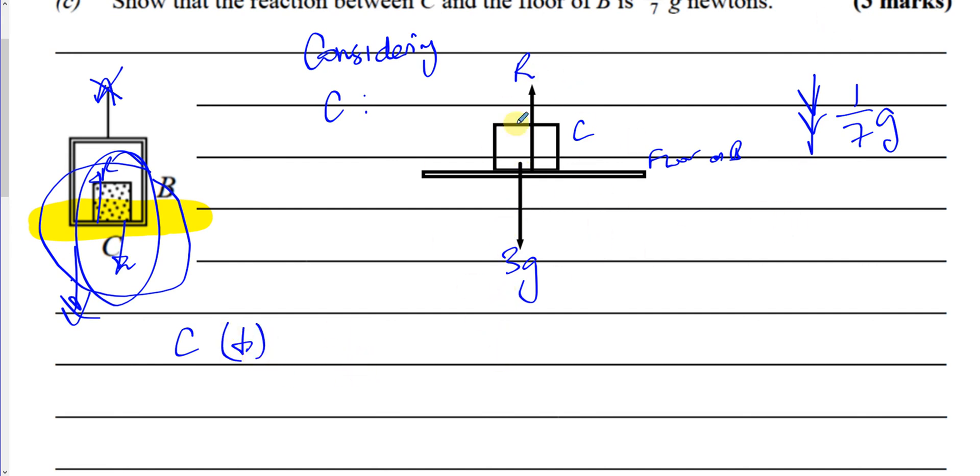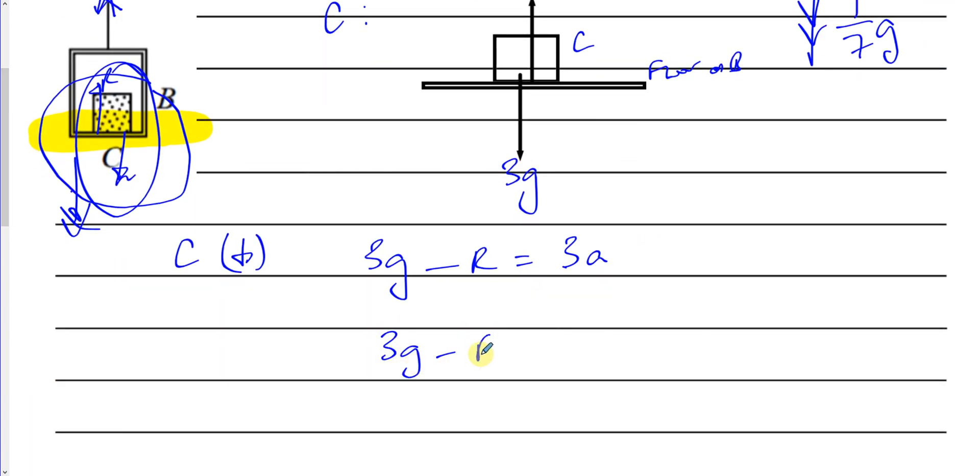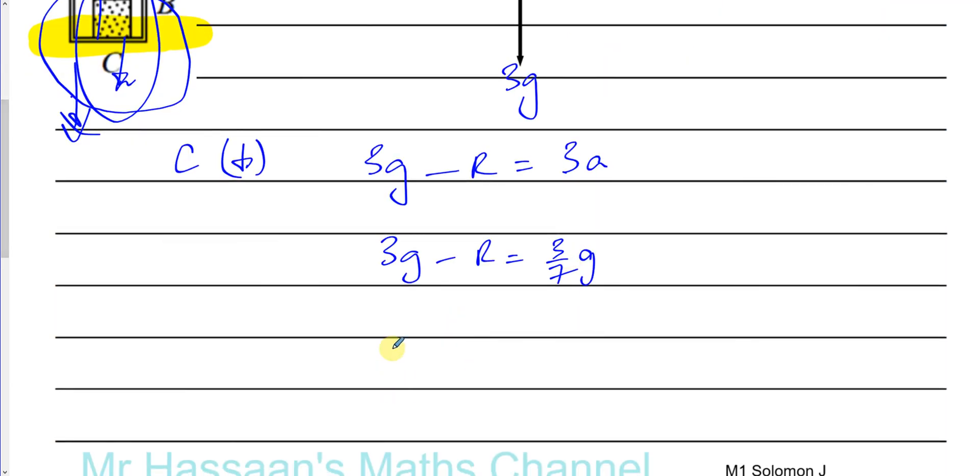The resultant force acting on C alone is 3G minus the reaction R, which we have to find, and that's equal to the mass, which is 3 times acceleration. I'll write that as A for now. We know A is 1 over 7G. So we have 3G minus R equals 3 times 1 over 7, which is 3 over 7G. And we can now find what R is. We can rearrange this. You've got 3G minus 3 over 7G equals R. So therefore, R is equal to, now we've got to make them into equivalent fractions. 3 is the same as over 7, 21 over 7G minus 3 over 7G. So therefore, R is equal to, if you subtract them, you get 18 over 7G Newtons. And there we have the answer for R.